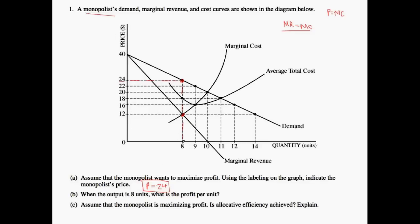Now the next question: when the output is 8 units, what is the profit per unit? We need to figure out what is the price minus the average total cost, because that would tell us what the profit is. We know the price at a quantity of 8 is 24. The corresponding average total cost at that point is 18, therefore 24 minus 18 equals 6. So when you need to find the profit, you do P minus ATC, and you will see that this difference is equal to your profit.